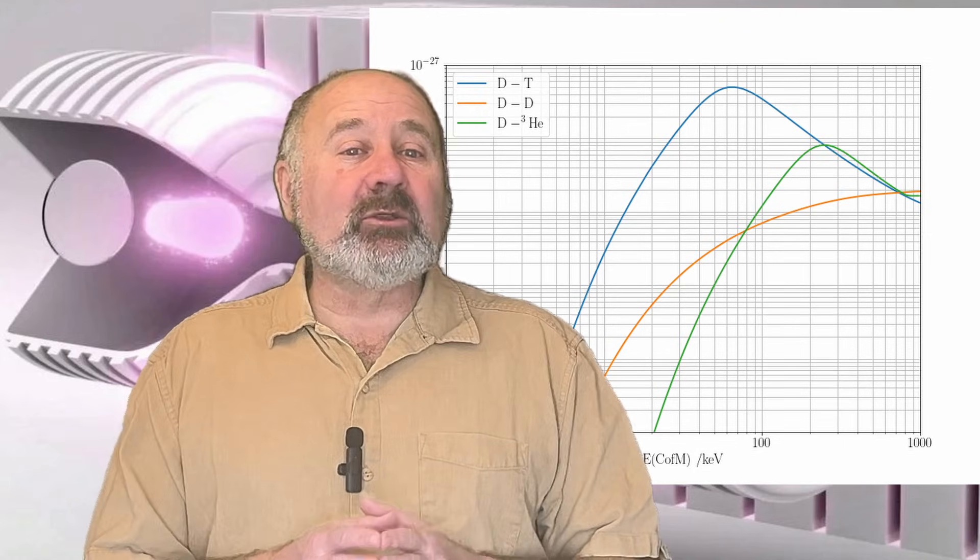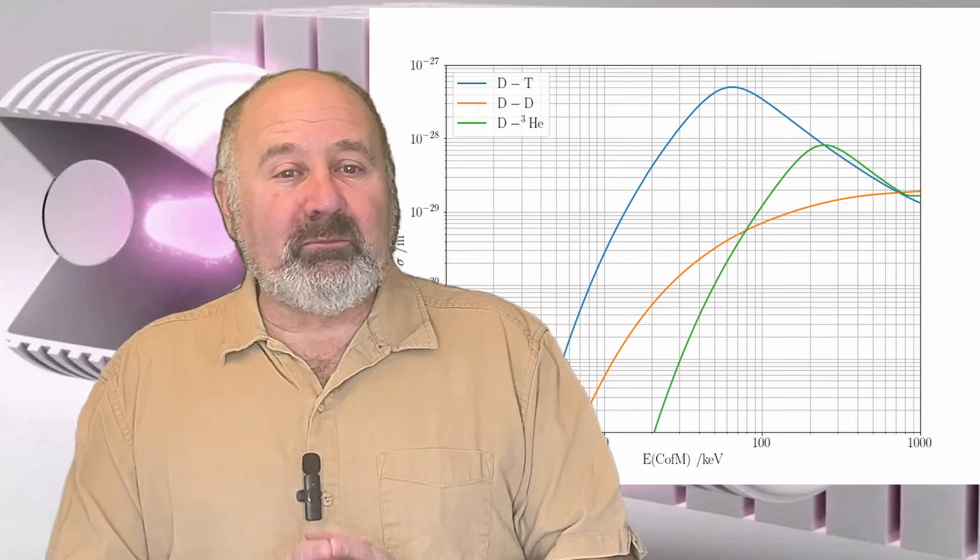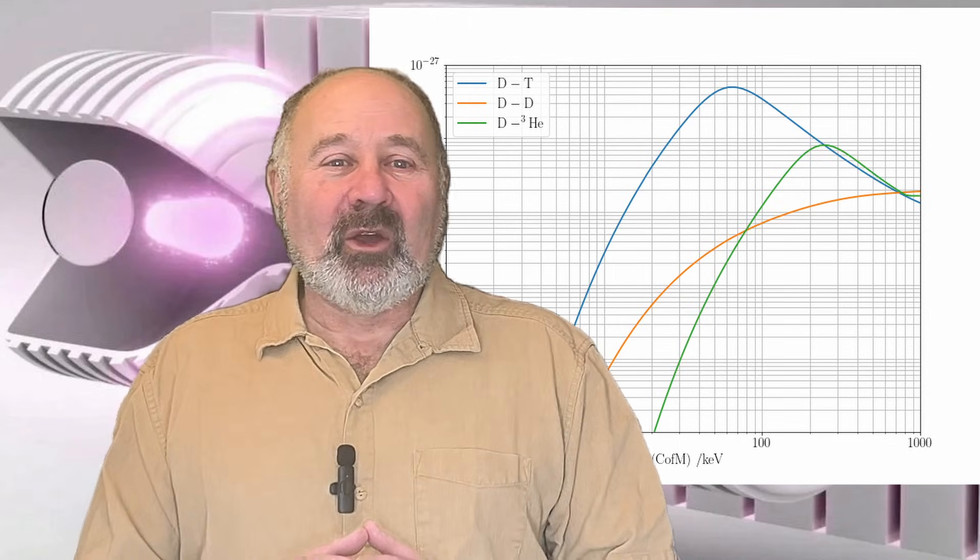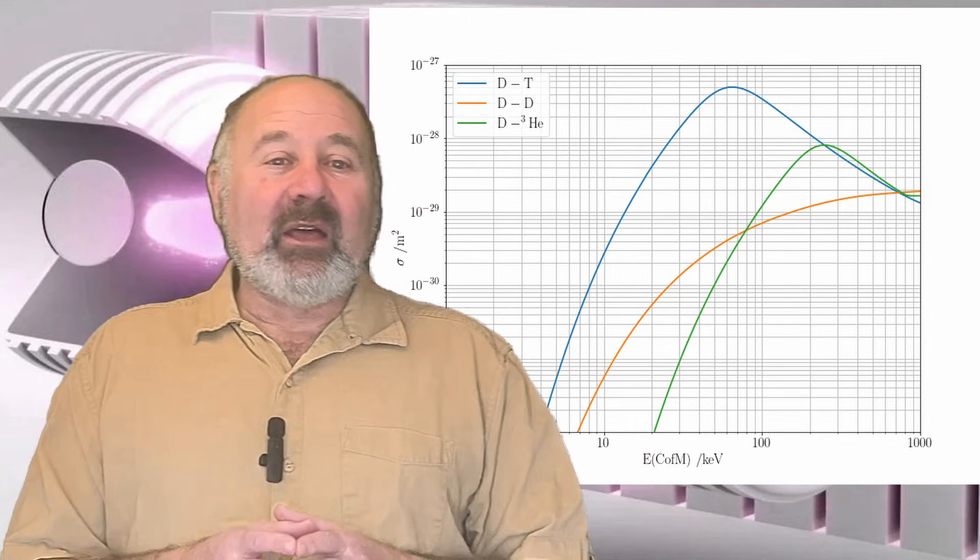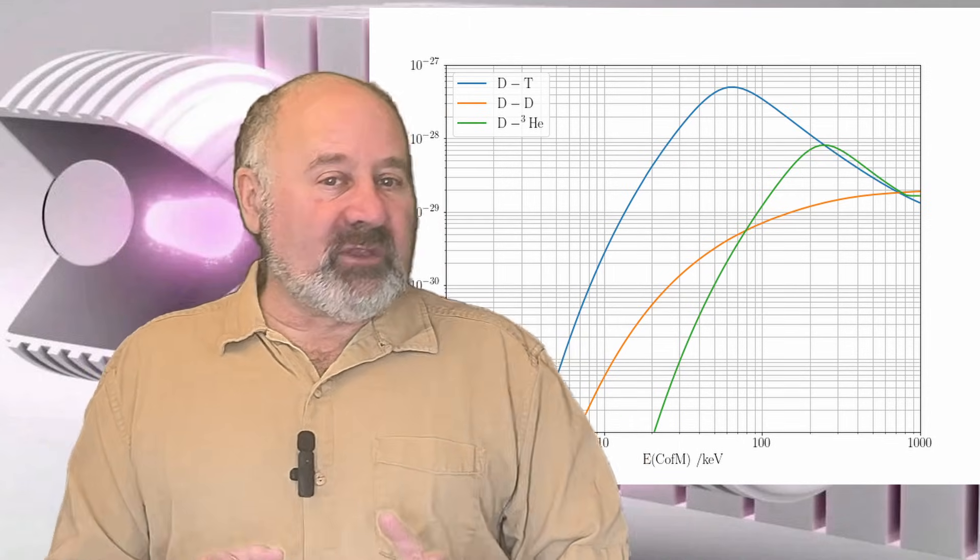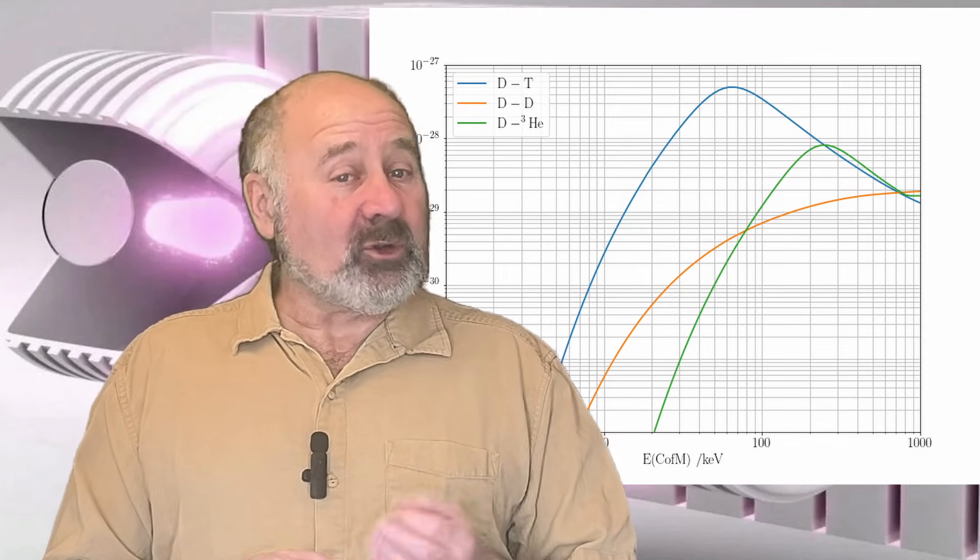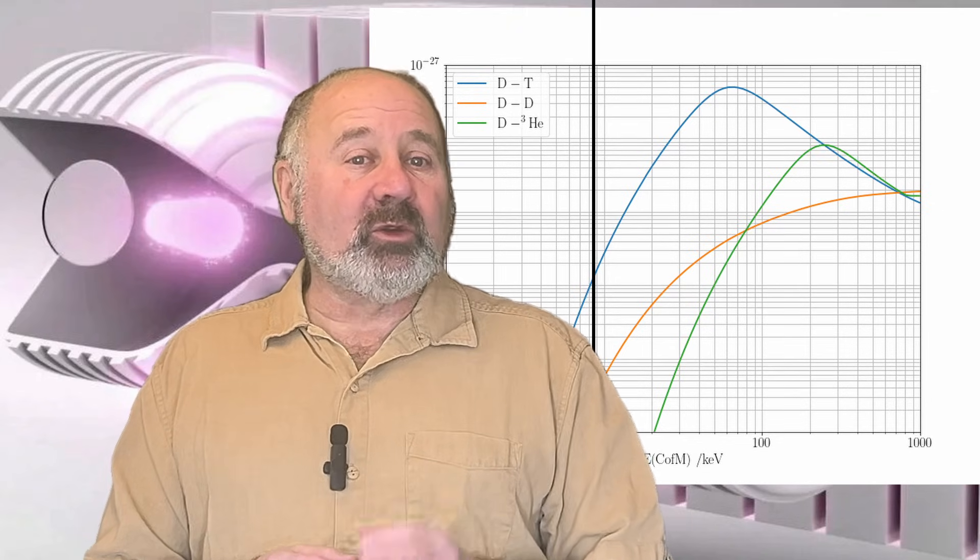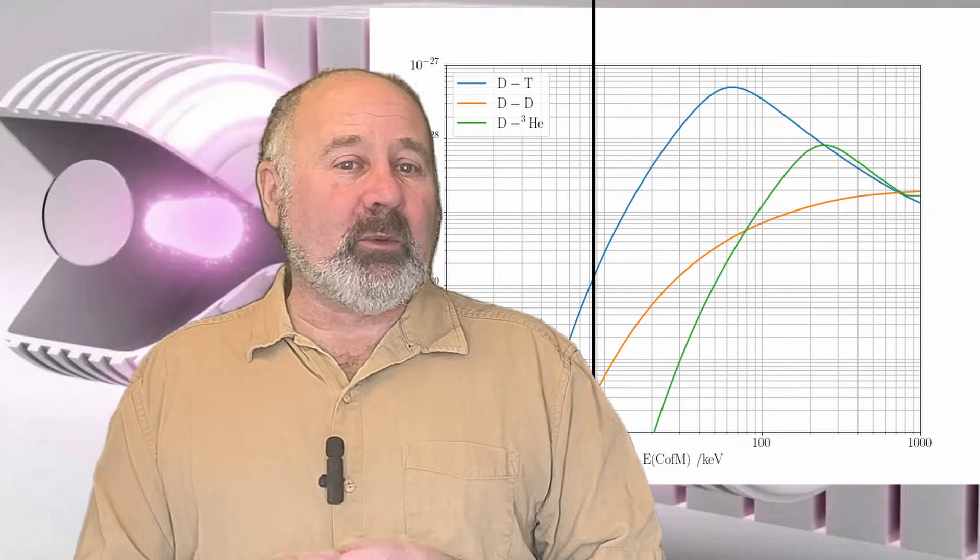The x-axis is in kiloelectron volts, which is a unit beloved by physicists and only physicists. For now, you just need to understand that it will be difficult to reach all of these energies. Their sixth prototype, Trenta, achieved energies around 9 keV, too low to achieve deuterium-helium-3 reactions.